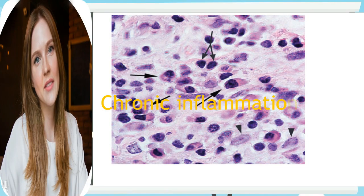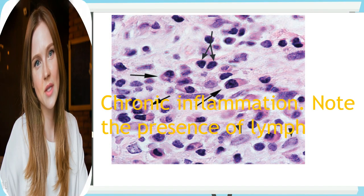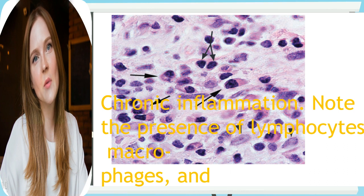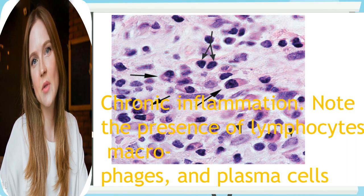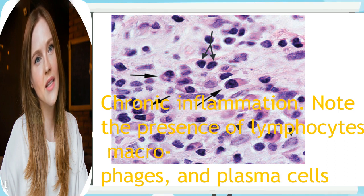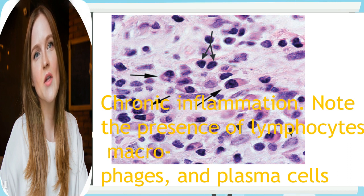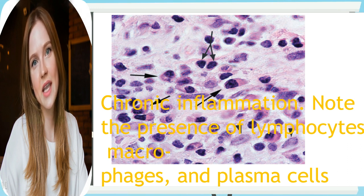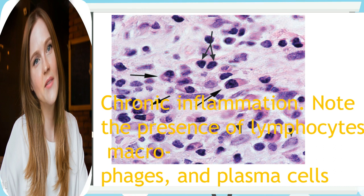Chronic inflammation can occur when the inciting injury is persistent or recurrent, or when the inflammatory reaction is insufficient to completely degrade the agent — bacteria, tissue debris, and foreign bodies — that incites the inflammatory reaction. It often occurs de novo,